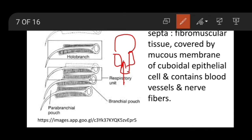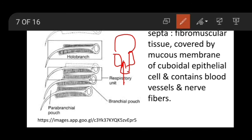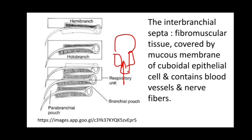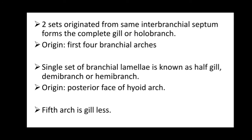The interbranchial septa consist of fibromuscular tissue covered by mucous membrane and cuboidal epithelial cells, and contain blood vessels and nerve fibers. The branchial pouch is the distance between two interbranchial septa. A hemibranch has only half a gill. A series of thin, highly vascular horizontal folds called branchial lamellae originate from the mucous membrane of the branchial pouches. Two sets of lamellae — anterior and posterior — originate from the same interbranchial septum and form a complete holobranch.